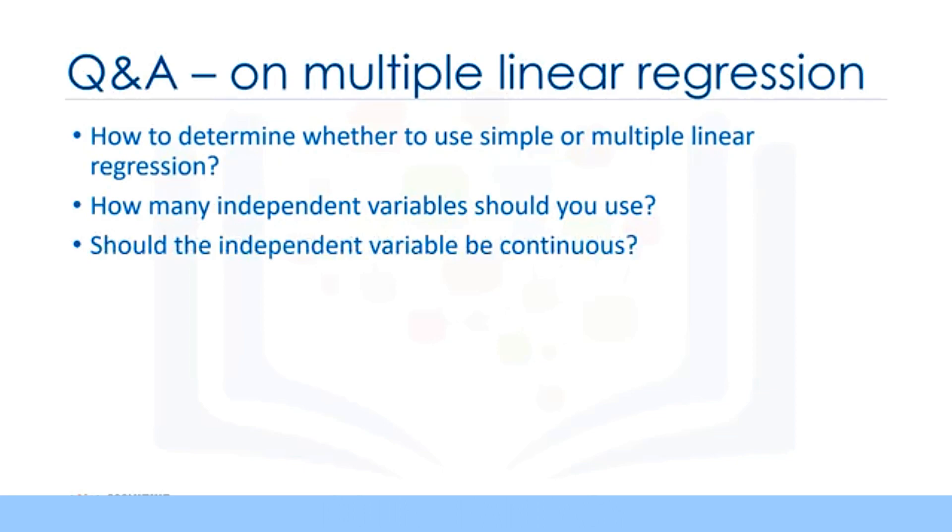The next question is, should independent variables be continuous? Basically, categorical independent variables can be incorporated into a regression model by converting them into numerical variables. For example, given a binary variable such as car type, you can code dummy 0 for manual and 1 for automatic cars.